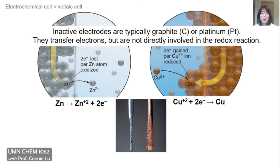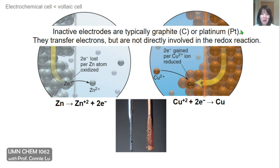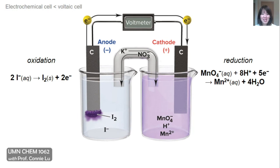In some cases, we don't want our metal electrodes to be changing so much physically. We can replace these with what are called inactive electrodes, typically made of graphite or platinum metal. Generally, they transfer electrons, but neither the carbon nor the platinum atoms are actually involved in the redox reaction. Sometimes it's really necessary to use inactive electrodes, for instance, when you have reactants that aren't amenable to serve as an electrode themselves. Here's an example of a voltaic cell using two inactive graphite electrodes in each of these half cell reactions.